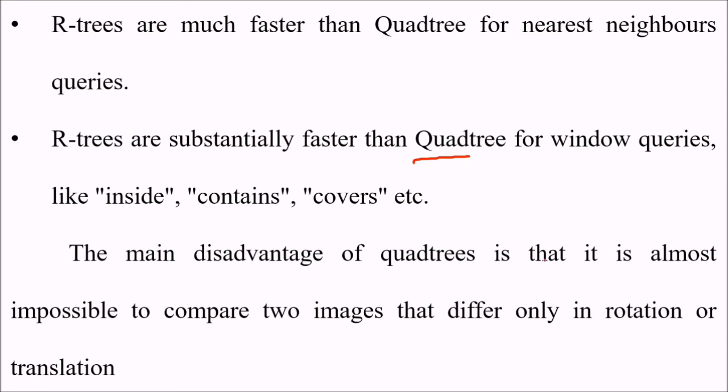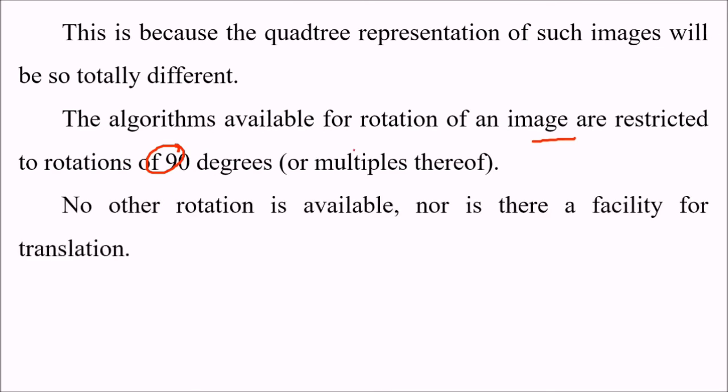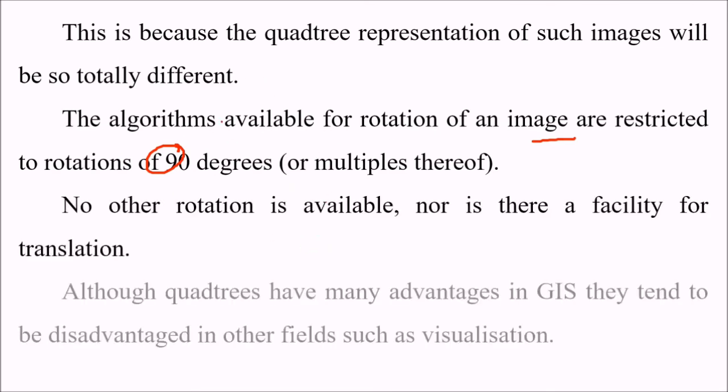The main disadvantage of quadtree is that it is almost impossible to compare two images that differ only in rotation or translation. This is because the quadtree representation of such images will be totally different. The algorithms available for rotation of an image are restricted to rotation of 90 degrees and their multiples. So no other rotation is available, nor is there any facility for translation.